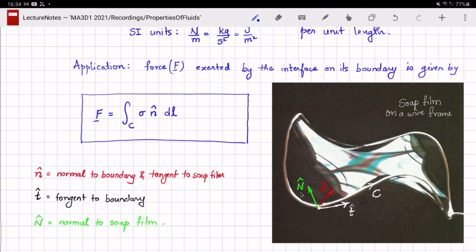The unit vector capital N hat is everywhere normal to the surface of the soap film including on the wire frame and the little n hat in red is a cross product between the two, defined as capital N hat cross T hat. So you will note that this vector little n hat is in fact normal to the boundary of the soap film but is tangent to the surface of the soap film. So with this little n hat, the force exerted by the interface on the boundary can be expressed as the integral along the boundary curve C of the coefficient of surface tension sigma times n hat dl.